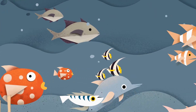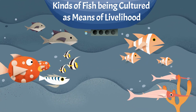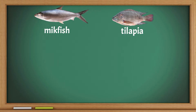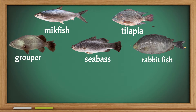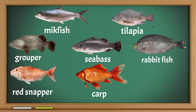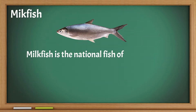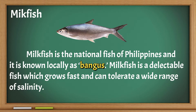Kinds of fish being cultured as means of livelihood: Milkfish and tilapia are the major fishes now produced. Groupers, sea bass, rabbitfish, red snappers, carps, and catfishes are also grown by some farmers.